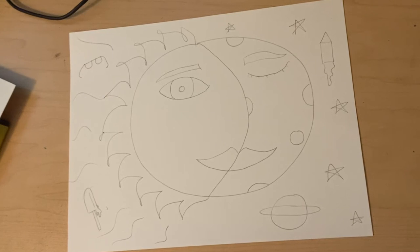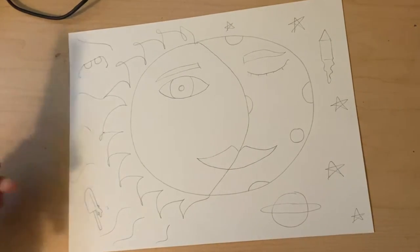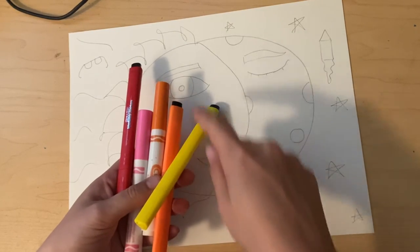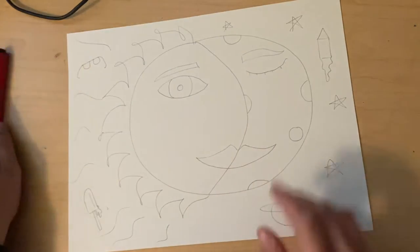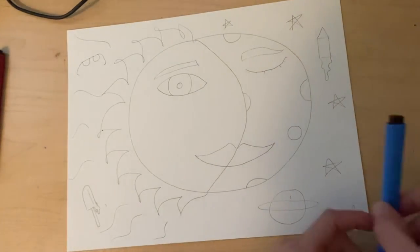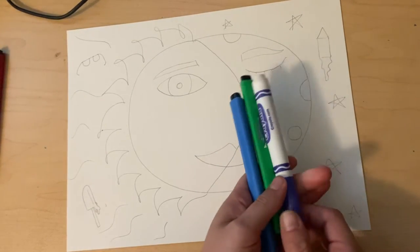For color you can choose whether you use markers, crayons, or colored pencils. I'm going to show you a couple different options that you have for colors. But the most important thing to think about is that on the warm side where my sun is, I'm only going to be using my warm colors. So remember my warm colors are colors like red, orange, yellow, and pink is included in my warm colors as well. But on my moon side I'm only going to be using my cool colors. So colors like blue, green, purple, and colors that are close to that as well.